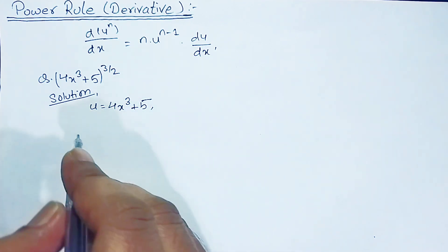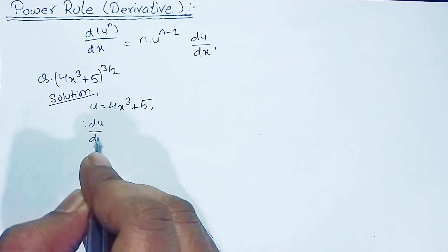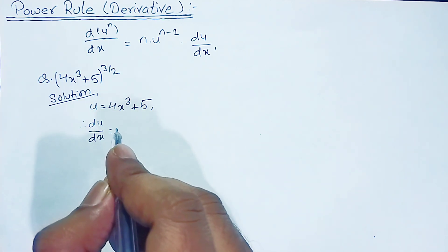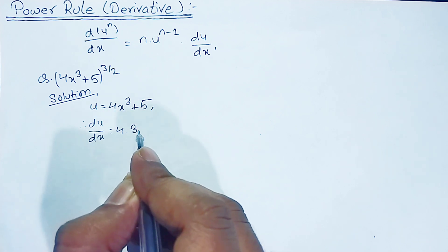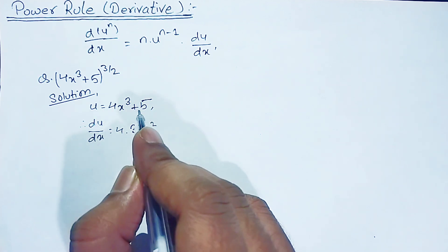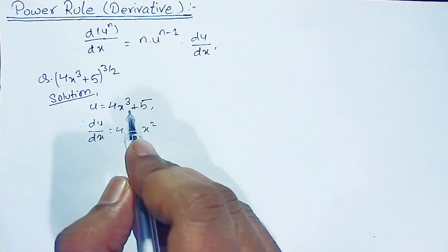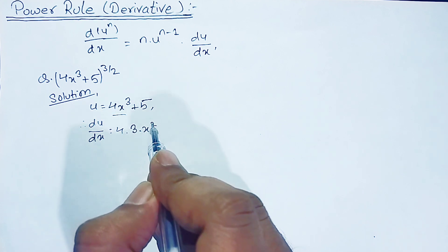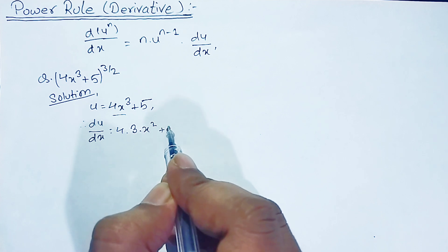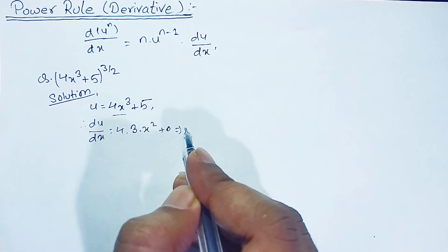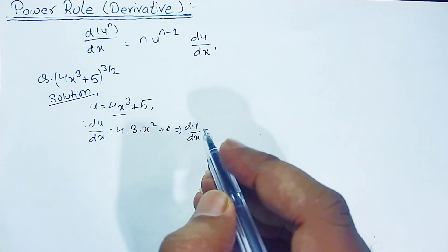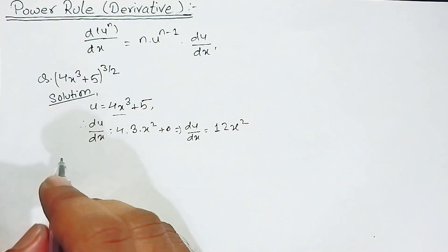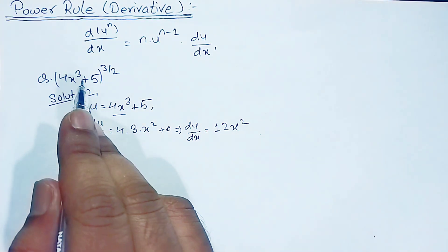We find the derivative of u with respect to x. Applying the power rule and sum rule, du upon dx equals the derivative of 4x³ which is 4 times 3 times x squared, and the derivative of the constant 5 is 0. So du upon dx equals 12x².